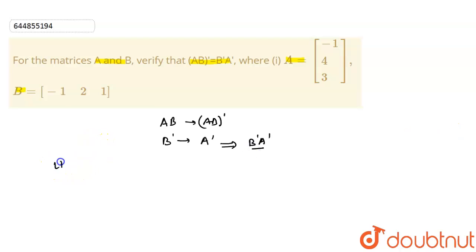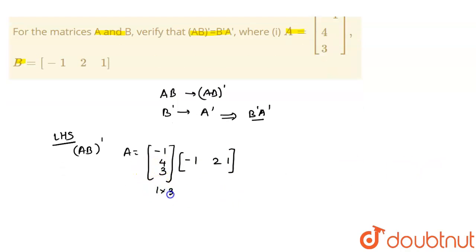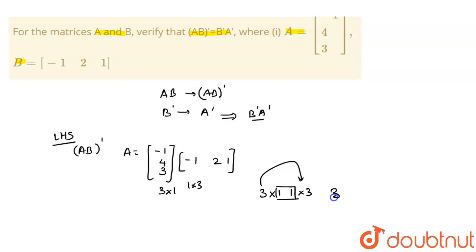So first I'll consider the LHS, which is (AB)ᵀ. A is equal to [-1, 4, 3], which is of order 3×1, and B is equal to [-1, 2, 1], which is of order 1×3. So their product AB would be a matrix of order 3×3.